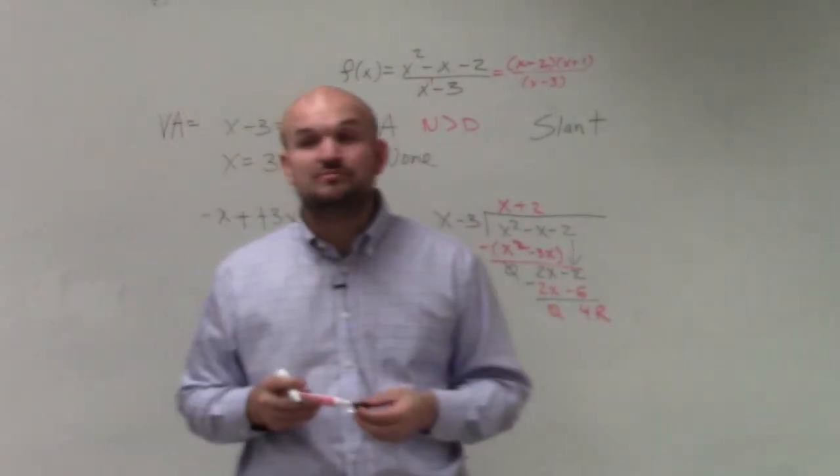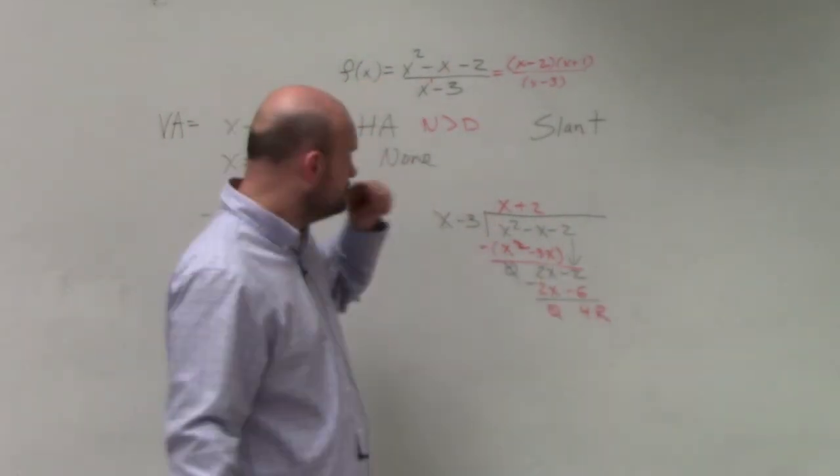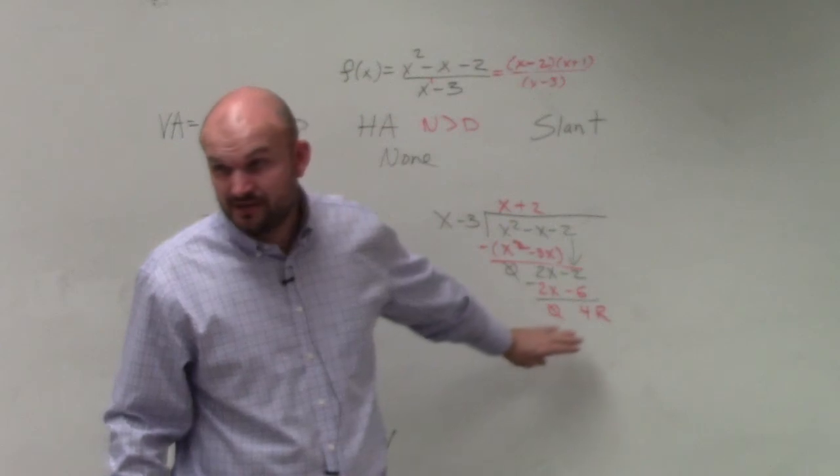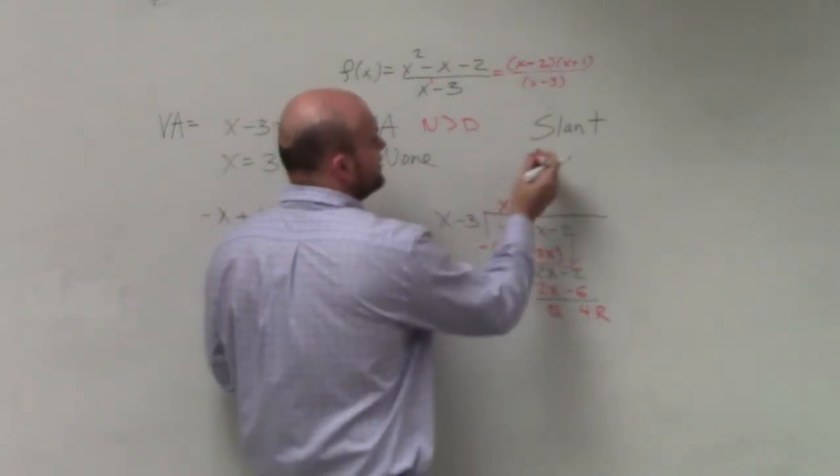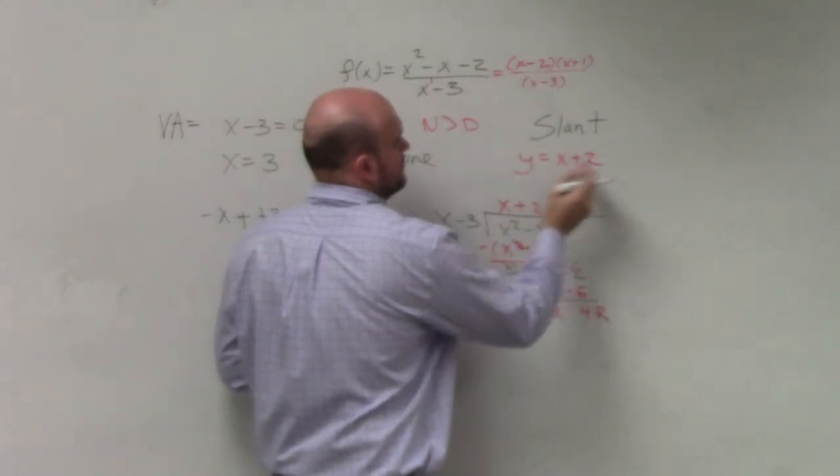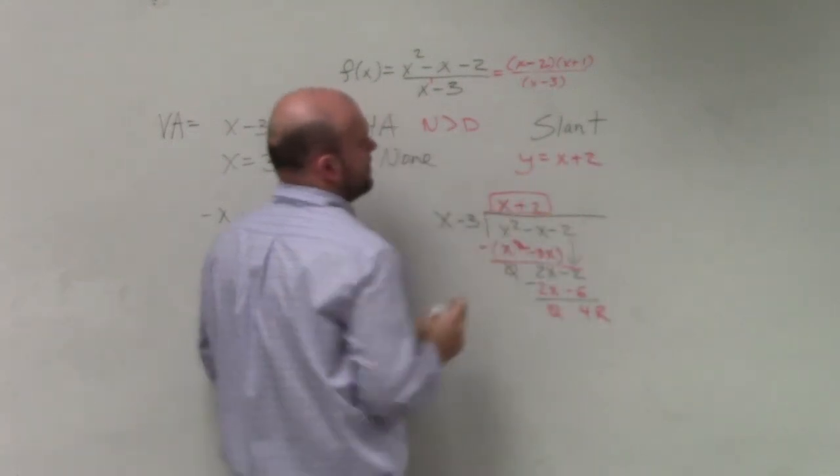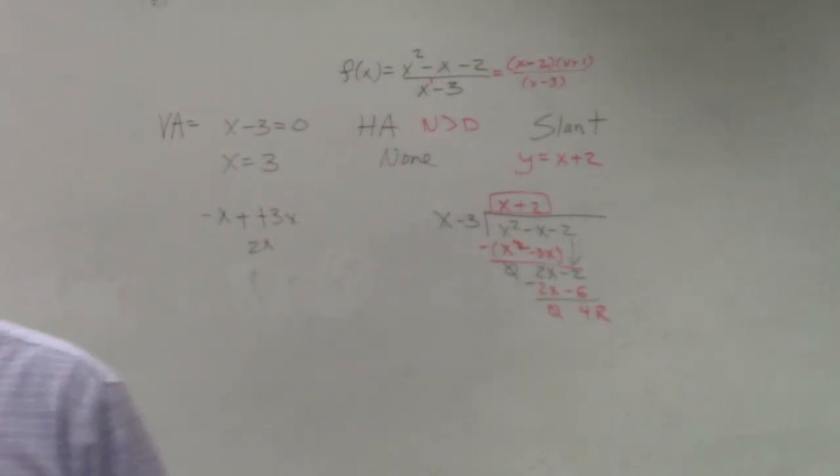However, don't worry about 4. x doesn't divide into 4. Don't worry about your remainder - it doesn't matter. Your slant asymptote is simply the quotient of the division. Don't worry if it has a remainder or not.